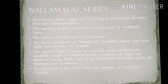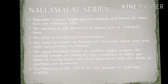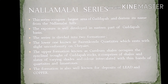The Nallamalai series occupies the largest area of Kadappa and derives its name from the Nallamalai hills. The exposure is well developed in the eastern part of the Kadappa basin. The series is divided into two formations: the lower Bairenkonda Quartzites, which rest slightly unconformably on the Cheyairs, and the upper Cumbum Shales, which occupy the synclinal trough of Kadappa rocks. The Cumbum formation comprises shales and slates of varying shades and colors, intercalated with bands of quartzites and limestone. This formation is very important as it is rich in lead and copper deposits.